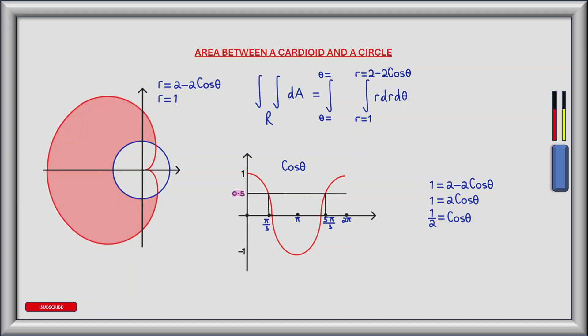The first value of theta where cos theta equals 1 half is 60 degrees or pi by 3 radians. Continuing in a positive direction, the second point at which cos theta equals 1 half is 5 pi by 3 radians or 300 degrees. So the two values of theta where the cardioid intersects the circle are pi by 3 radians and 5 pi by 3 radians. These values provide the limits of integration of our outer integral, from theta equals pi by 3 to theta equals 5 pi by 3.